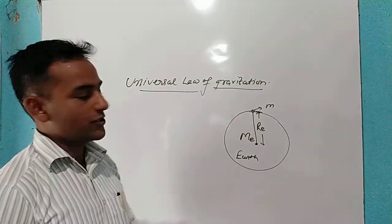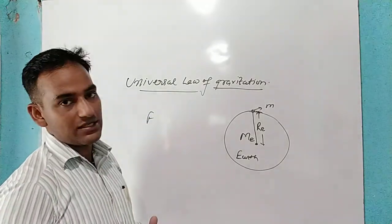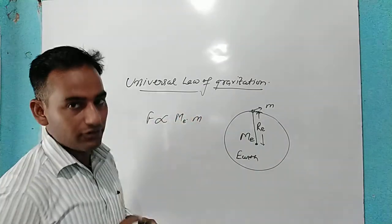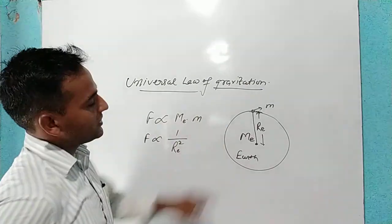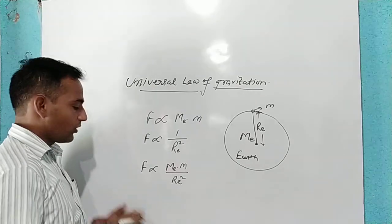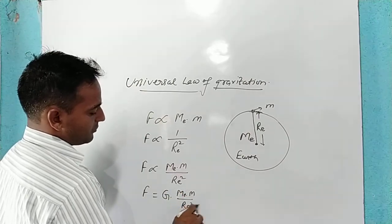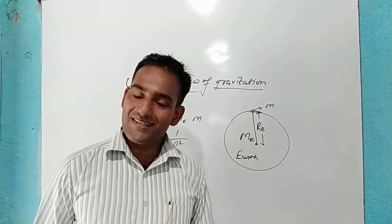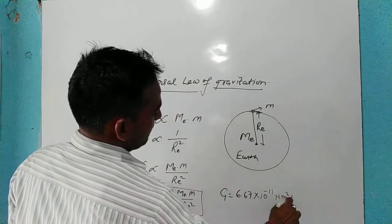If we apply the universal law of gravitation to this situation, we know the Earth attracts us with a force. F is directly proportional to the product of their masses — that is, mass of Earth Me and mass of person M. And F is inversely proportional to the square of the distance, which is Re square, since the distance is Re. Combining these: F is proportional to Me into M upon Re square. Removing the proportionality sign: F equals G times Me into M upon Re square. We know the mass of the Earth and the radius of the Earth. Putting those values in, we can find the force of attraction being applied by the Earth on us. The value of G is 6.67 into 10 to the power minus 11 Nm square per kg square.